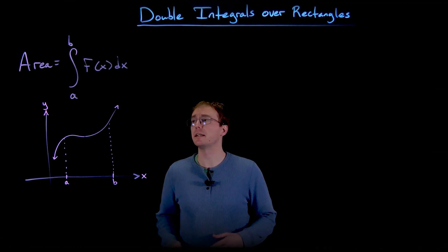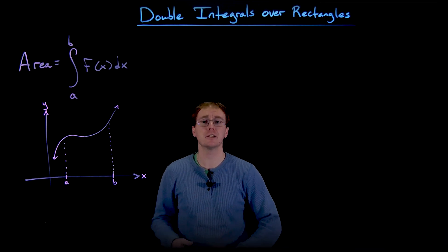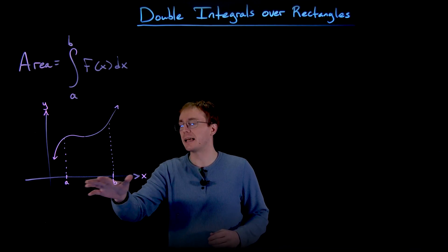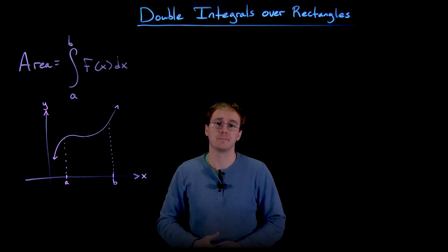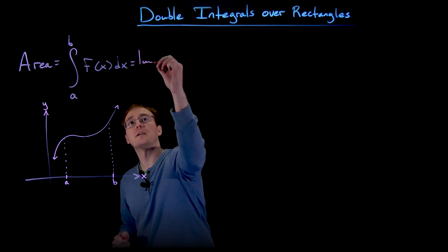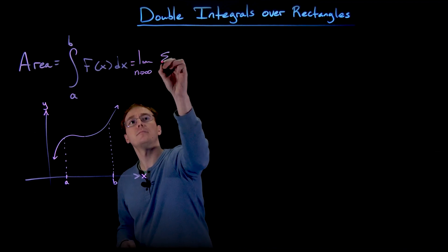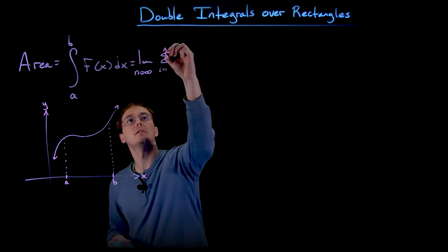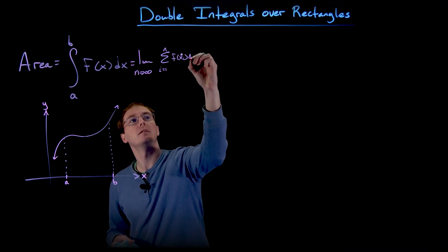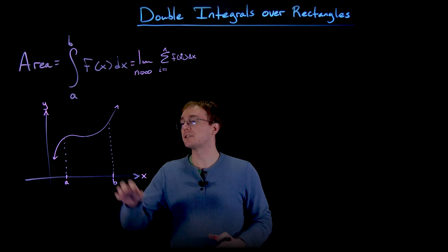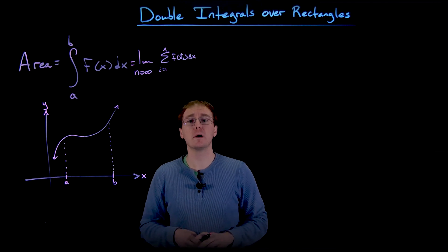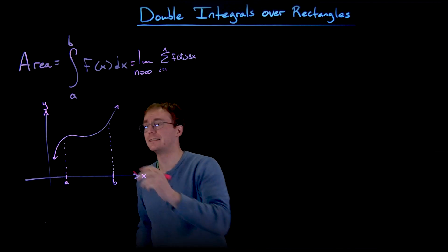We look at our single variable definite integral like the integral from a to b of our function f. One of our important interpretations of that integral is that it finds the area between our function and the x-axis over the interval from a to b. The way we originally constructed one of these definite integrals was by using the limit of a Riemann sum. The Riemann sum took our little region and split it up into a bunch of strips of equal width, and the width of each of those strips was what we called delta x.